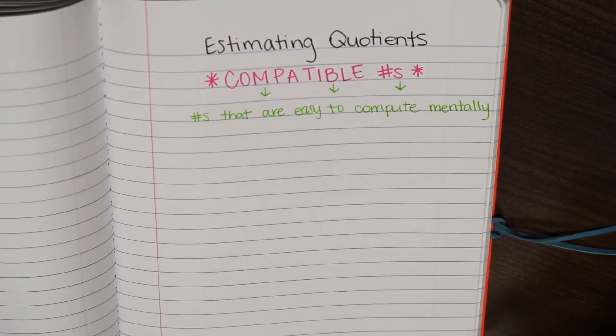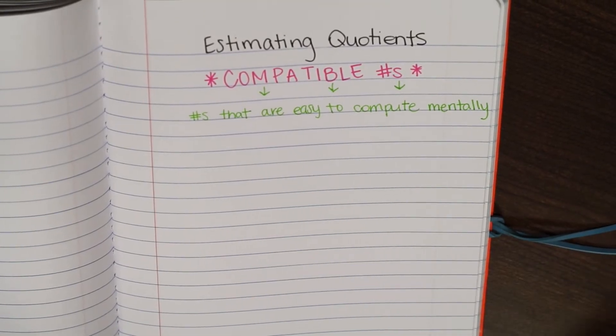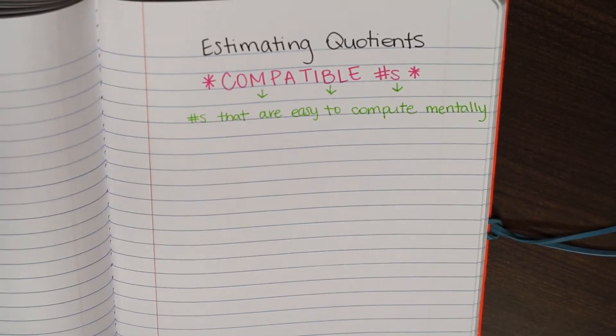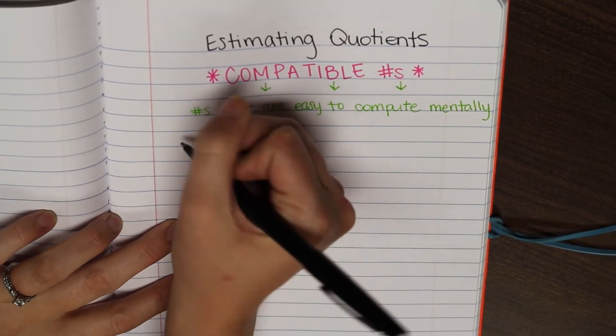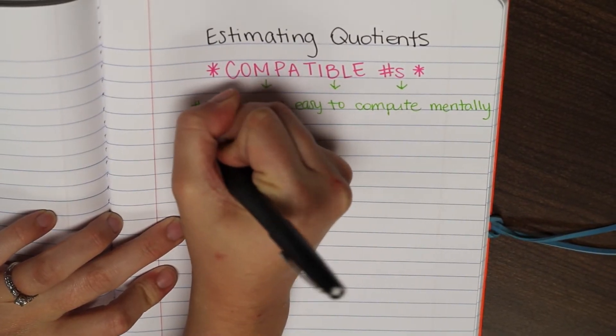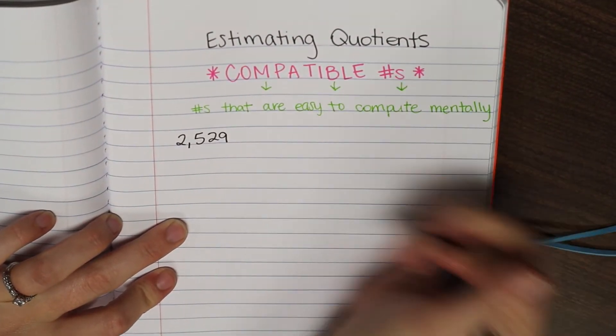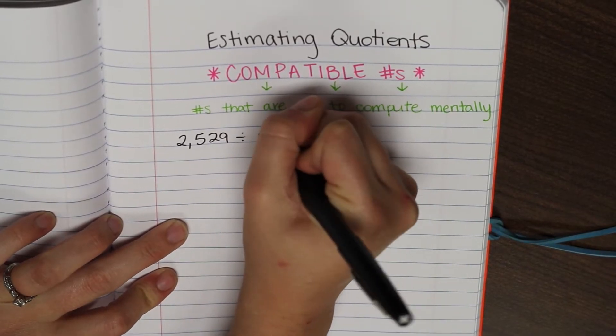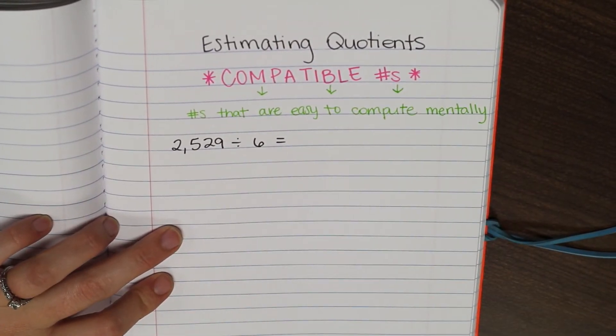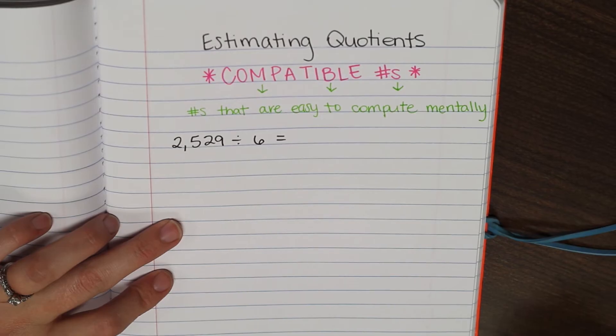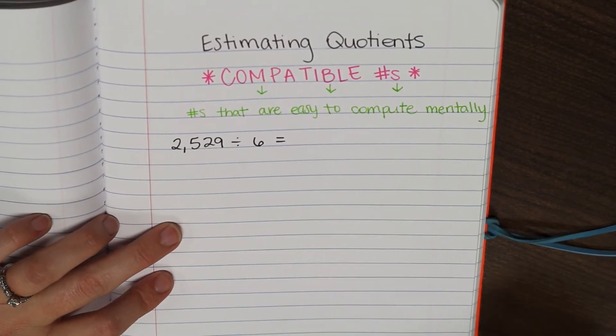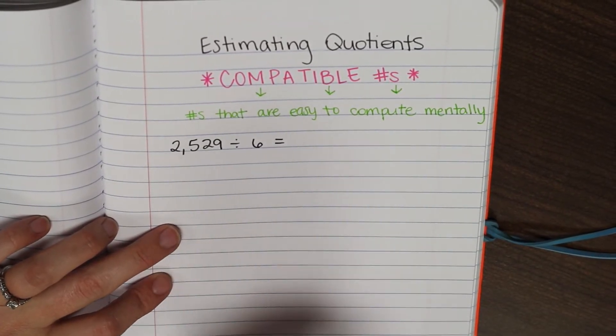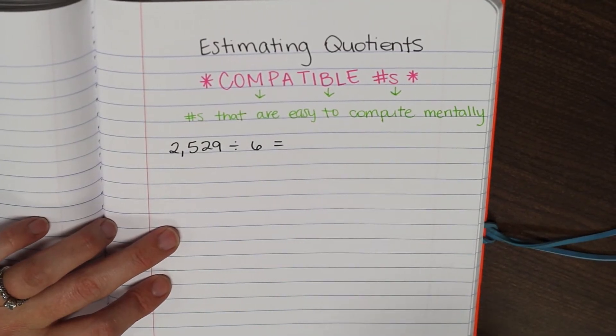So when we're estimating, we want to make our math as easy as possible. So let's start with a division problem of 2,529 divided by 6. Now, I'm not looking for an actual answer. I just want an estimate. So we're going to use compatible numbers to give ourselves a good range of where our answer should be.